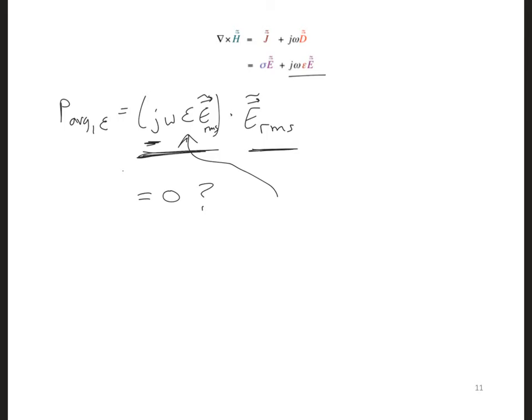That is, the only way that this dot product is non-zero and results in dielectric heating and power dissipation is if epsilon is a complex number. That is, if epsilon has a real and an imaginary part, so it would be equal to epsilon prime, the real part, minus j epsilon double prime.